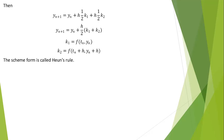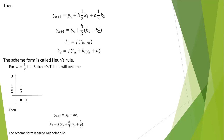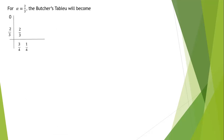When alpha equals 1/2, the Butcher tableau gives a different scheme where b₁ equals 0, so the k₁ term drops out. The update becomes y_(n+1) equals y_n plus h·k₂, where k₂ equals f(t_n plus h/2, y_n plus h/2·k₁). This scheme is called the midpoint rule.